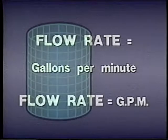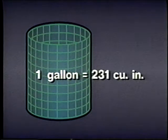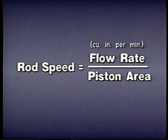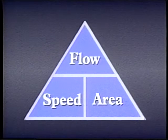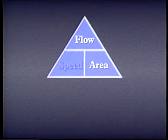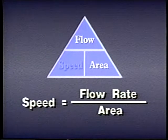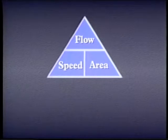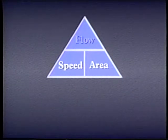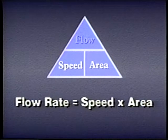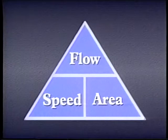Sometimes the flow rate is given in cubic inches per minute. You can convert gallons per minute to cubic inches per minute by multiplying GPM by 231, the number of cubic inches in a gallon. The speed at which the piston rod moves can be calculated by dividing the flow rate in cubic inches per minute by the area of the piston in square inches. Using the triangle: speed equals flow rate divided by area; area equals flow rate divided by speed; flow rate equals speed times area. Remember that the flow rate, expressed as cubic inches per minute, is at the top of the triangle.